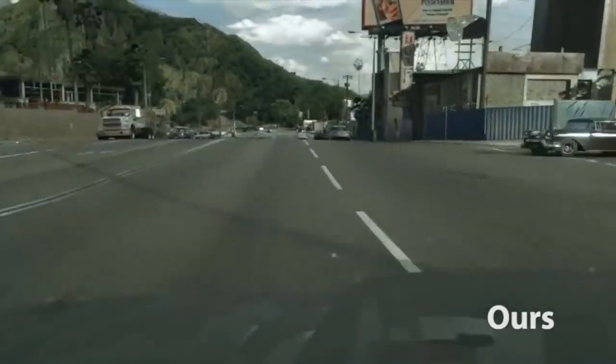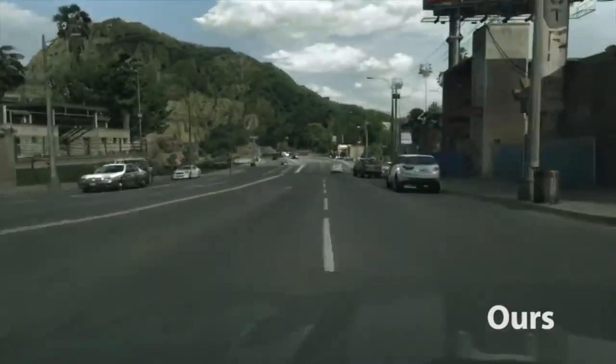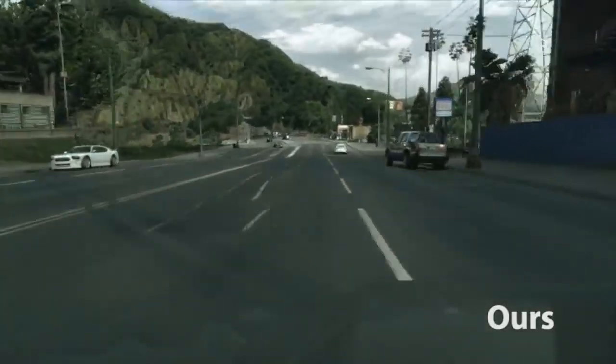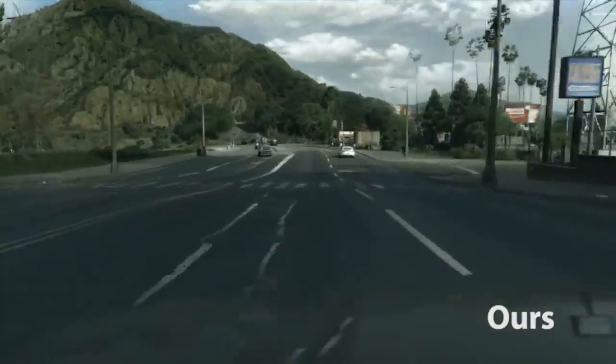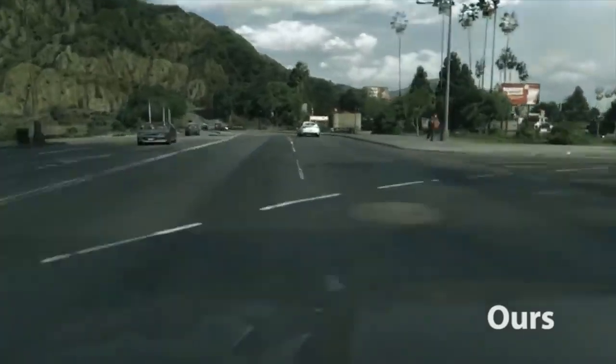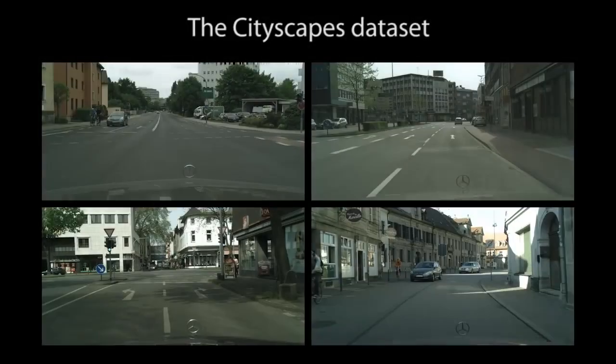This model was trained to translate GTA 5 to the Cityscapes dataset. Cityscapes contains mostly images of German cities recorded with an automotive-grade camera. Here are a few examples from the dataset.